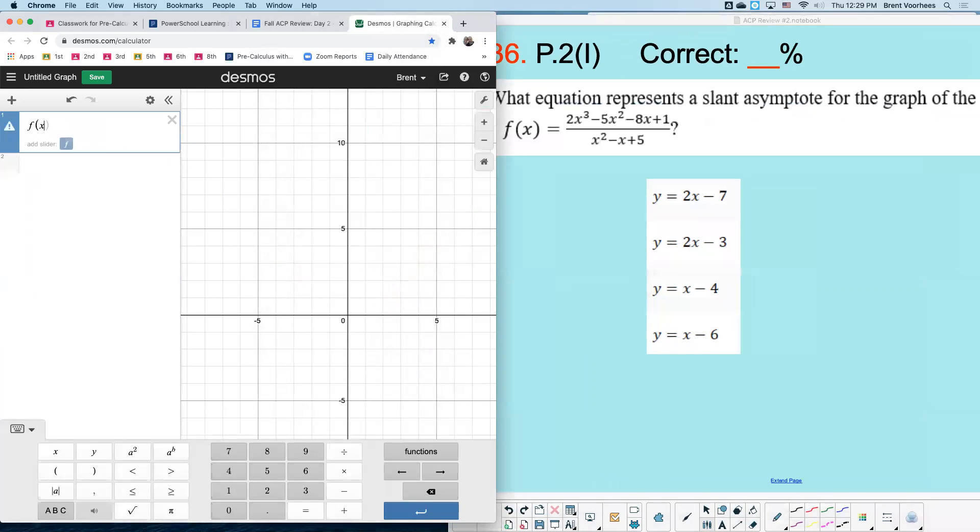With Desmos, asymptotes, I think, on multiple choice tests are very easy to get correct. I'll show you why. So graph this with me.